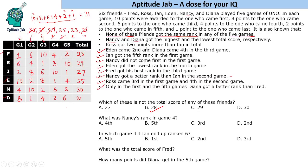Now we can answer the questions. Nancy's rank in game four: she got 6 points there, which is third rank. In which game did Ian end up ranked sixth? Ian is sixth in game five. What was the total score of Fred? Fred's total is 23. How many points did Diana get in the fifth game? Diana got 6 points in game five.